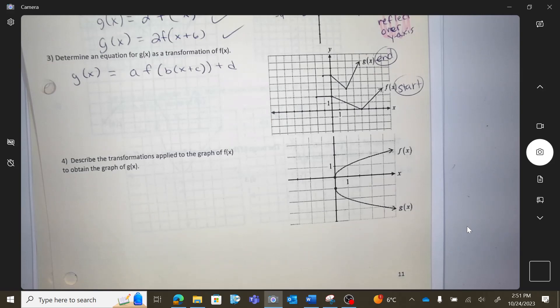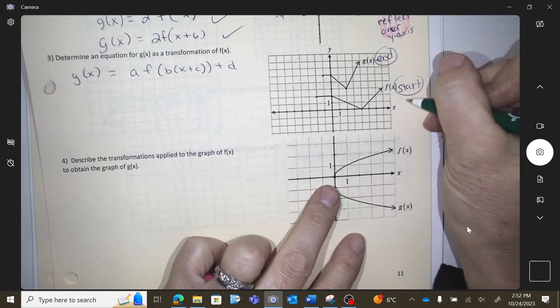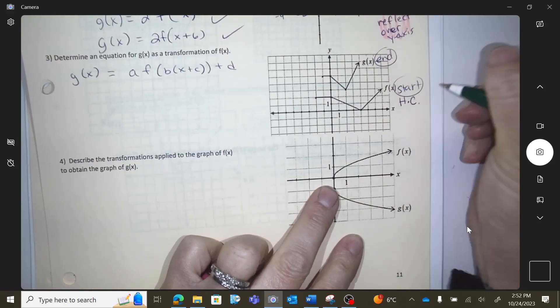What are we thinking? F to G. Have I done any reflections? No, there's no reflections. Have I stretched or compressed it either vertically or horizontally? Yes. What? I'm going to have to horizontally compress it.